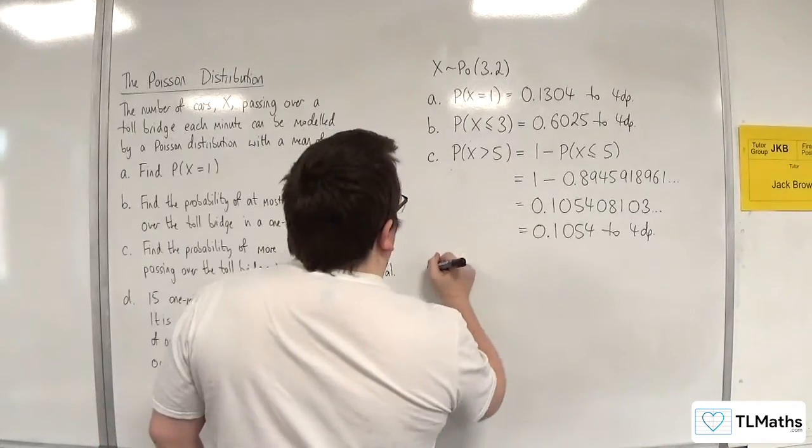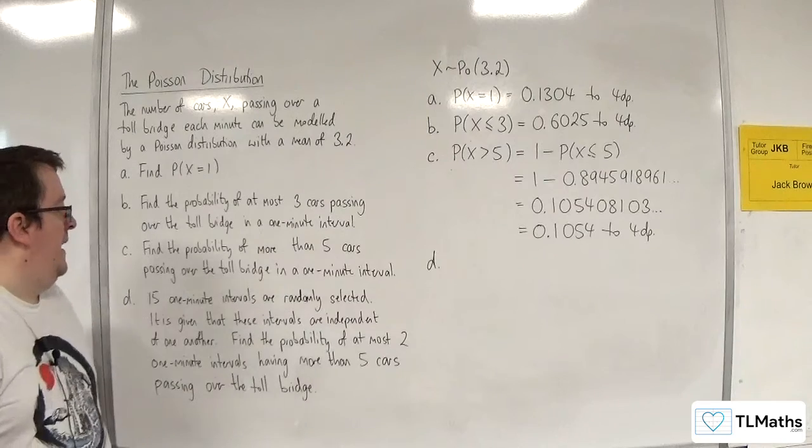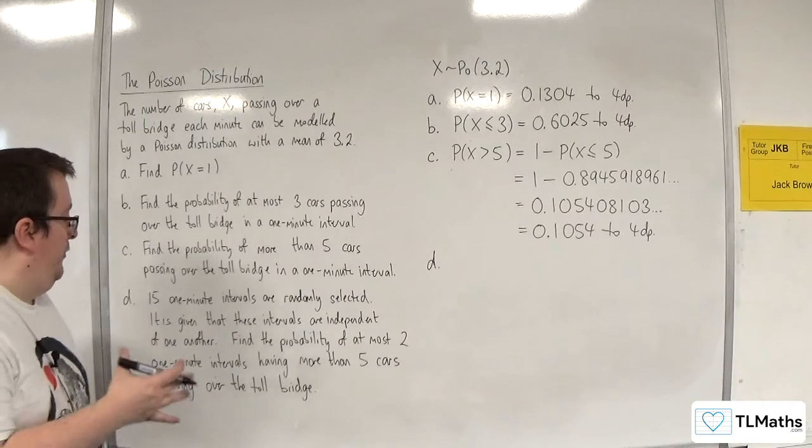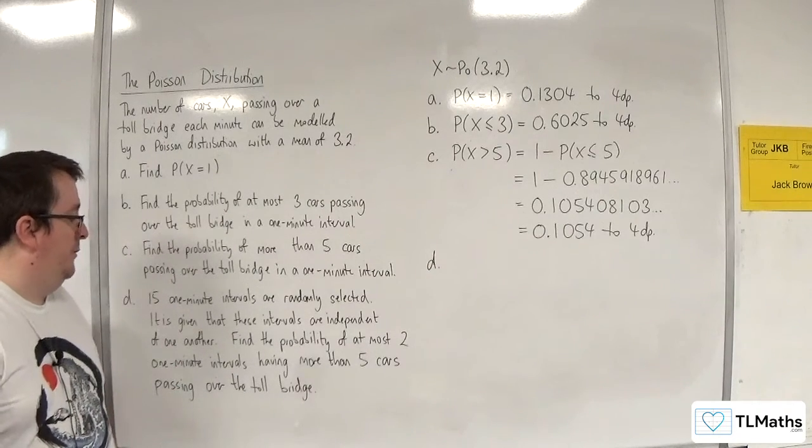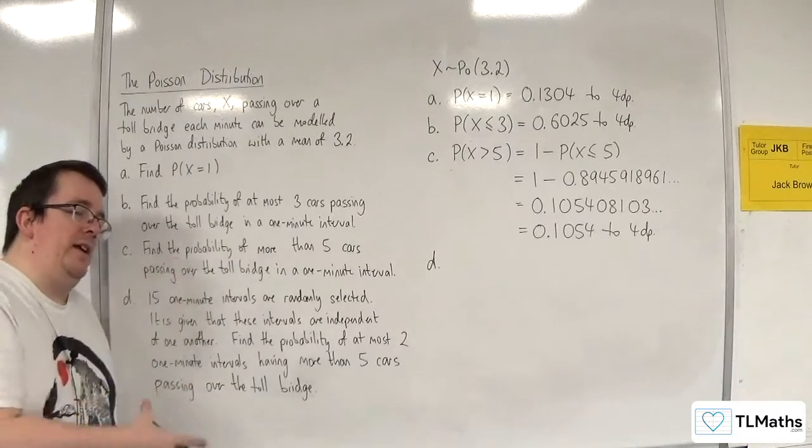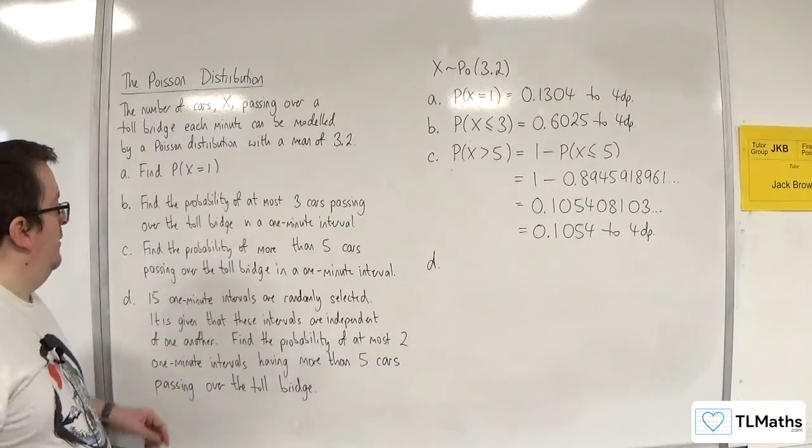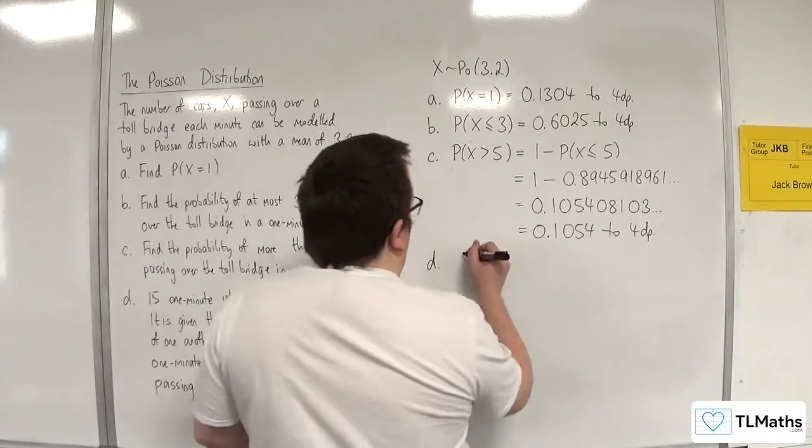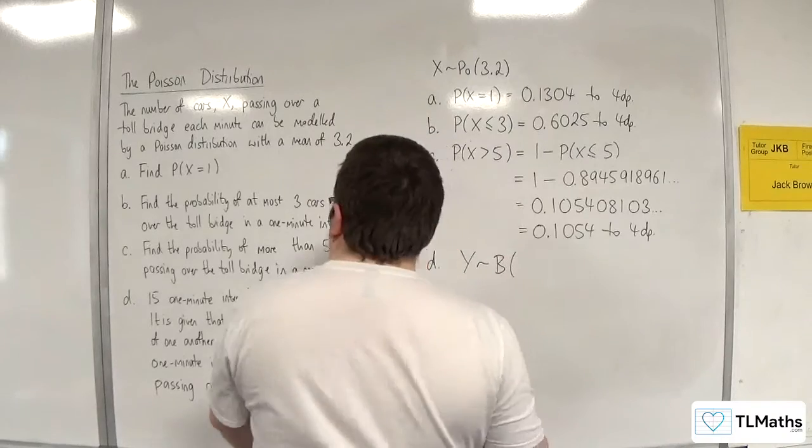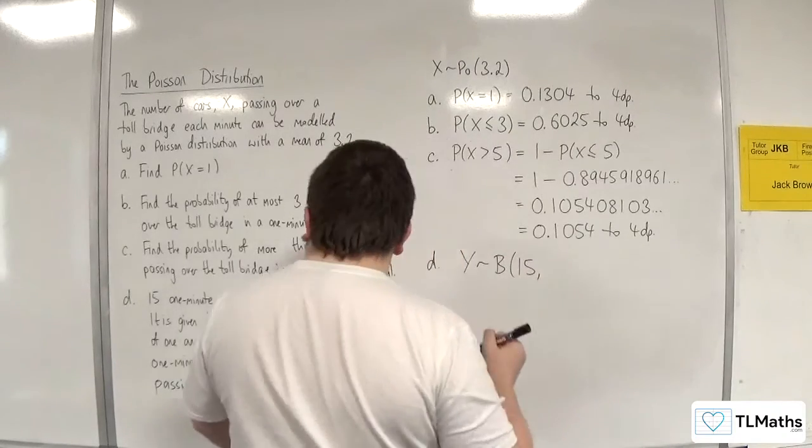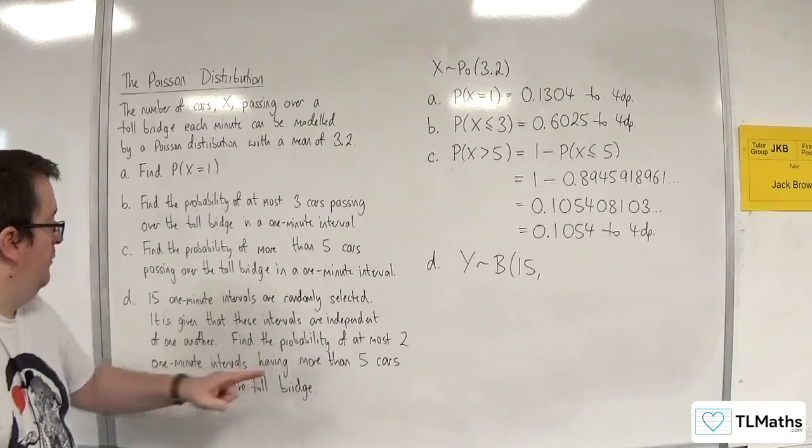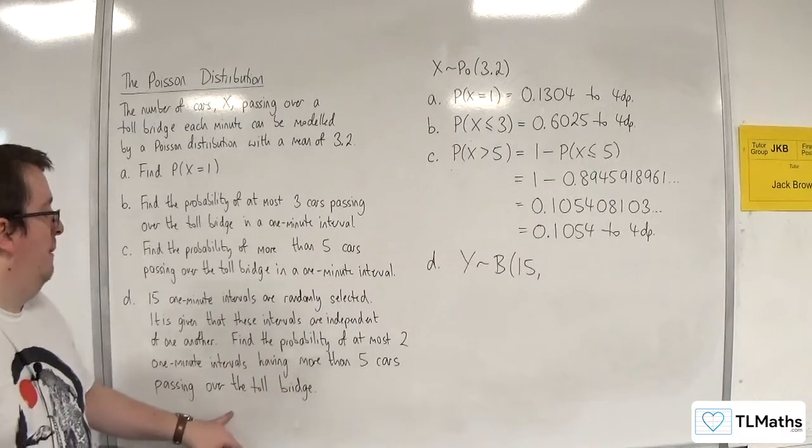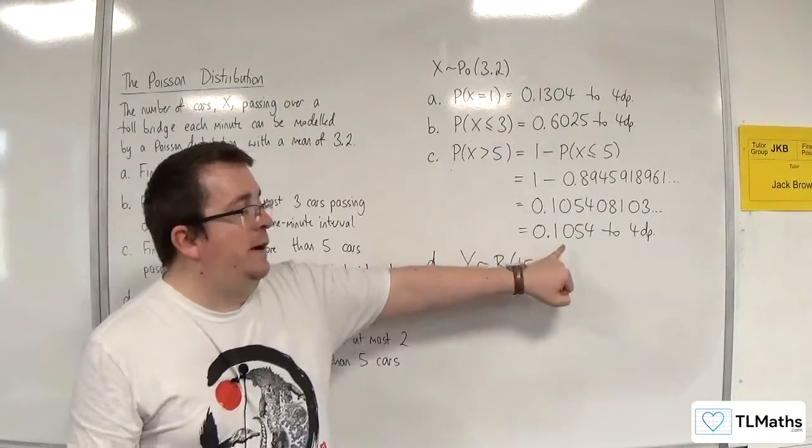Part D: 15 one-minute intervals are randomly selected. It is given that these intervals are independent of one another. Find the probability of at most 2 one-minute intervals having more than 5 cars passing over the toll bridge. So this has now turned into a binomial problem. It's binomial because we've got a fixed number of trials, 15, and they're independent of one another. So I'm going to set up a new distribution, y, which is a binomial distribution with n as 15. And the probability of success, well we've worked out what the probability of more than 5 cars passing over the toll bridge was. That was part C.